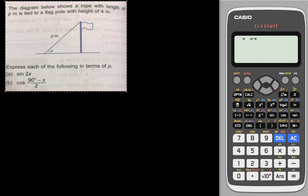So I know a four meter will be here, and then since this one gives us the height, I'll just assume here will be 90 degrees. And then they ask us to express each of the following in terms of p.